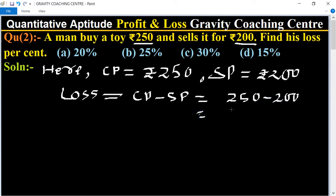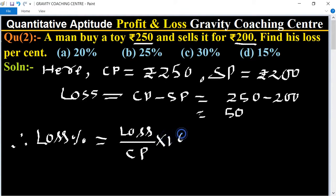50 is the loss. Therefore, loss percent equal to its formula, loss upon CP, and loss upon CP into 100. Here loss is 50 upon cost price is 250 multiply 100.